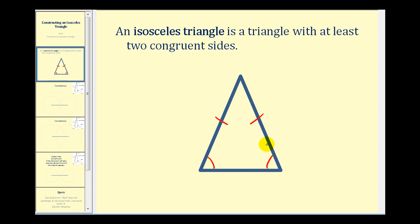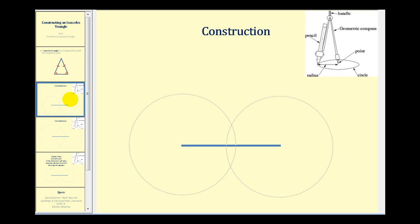Let's talk about how we can construct an isosceles triangle. In order to perform the construction, we need a straight edge and a compass. We would start with a segment of a specified length. If we're given the freedom to construct any isosceles triangle we want, the only restriction is that the radius of our compass must be more than half the length of the given segment.